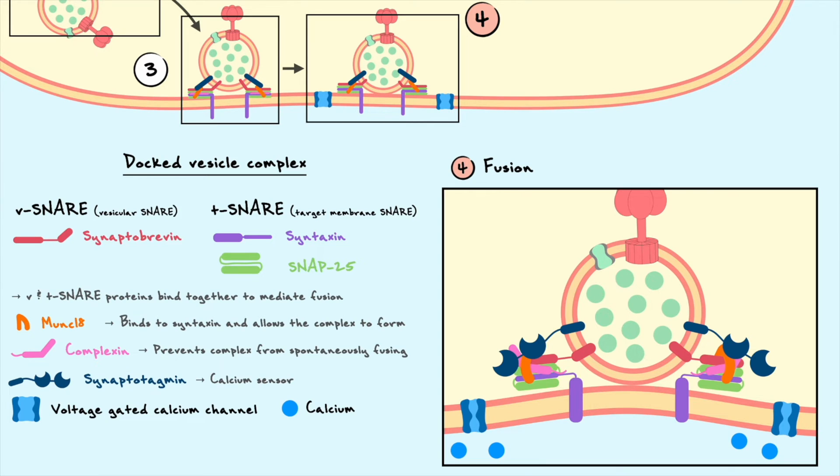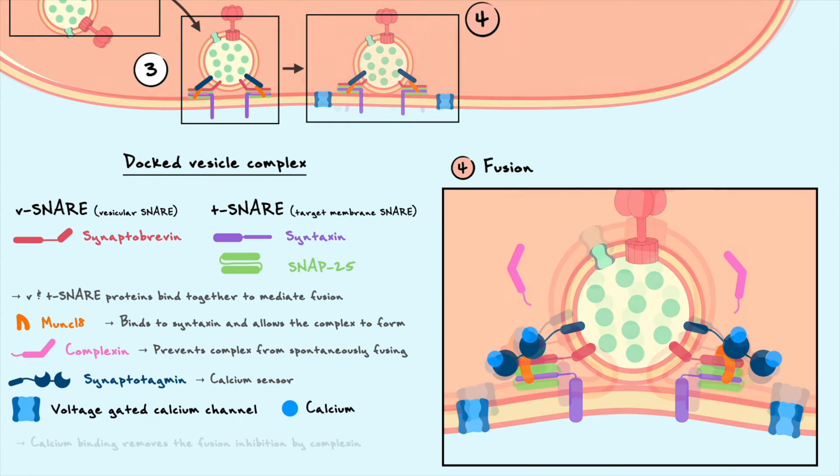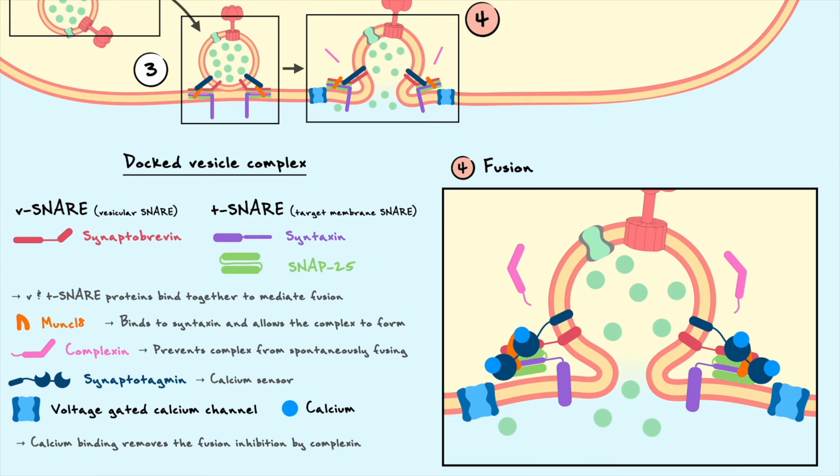Remember that voltage-gated calcium channels are mostly localized at the presynaptic terminal and that calcium is highly concentrated at the extracellular side. The leading hypothesis on how fusion works stipulates that as the action potential comes and depolarizes the terminal, the depolarization opens voltage-gated calcium channels and lets calcium enter. After entry, calcium binds to the binding sites of synaptotagmin, which dislodges the complex in such a way that complexin is removed and allows the exocytosis and lets the neurotransmitters diffuse in a cleft.